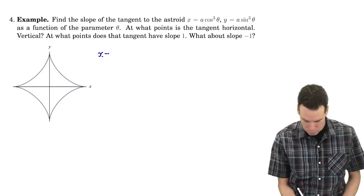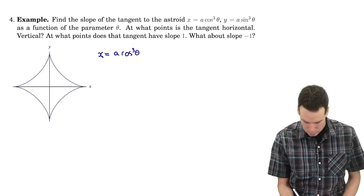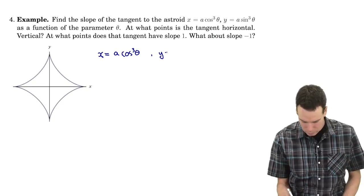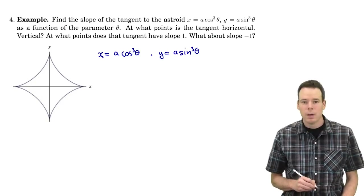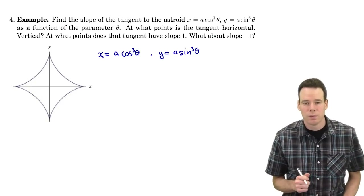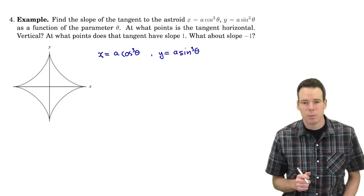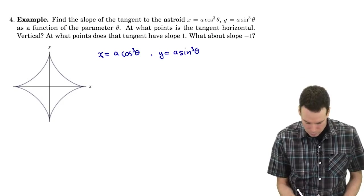Here is the parameterization: x equals a cos cubed theta, y equals a sine cubed theta. In order to find the derivative dy/dx we need to know the derivatives of each of these things with respect to theta.